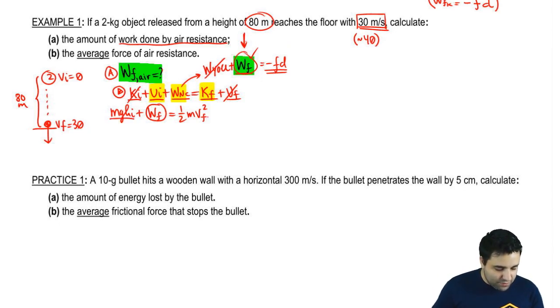And all we got to do now is move this to the other side. So the work done by friction is half, mass is 2, velocity at the bottom or speed at the bottom is 30, minus MGH. So M is 2, G we're going to use 10 just to make it a little faster, and H is 80.